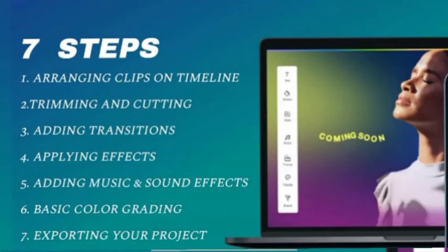To simplify all this, I spoke about the seven steps. Number one is arranging clips on the timeline. Number two is trimming and cutting to suit exactly what you want. Number three is adding transitions. Number four is applying effects. Number five is adding music and sound effects. Number six is basic color grading, and number seven is exporting your project.